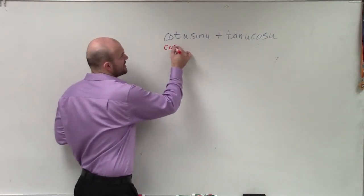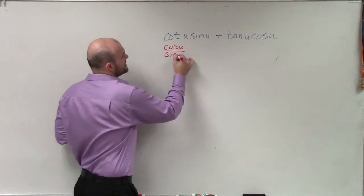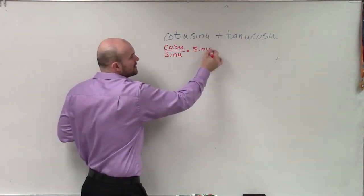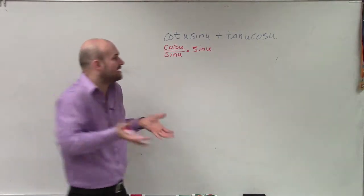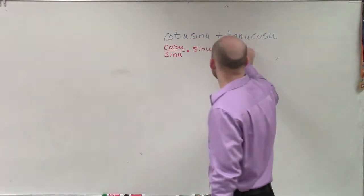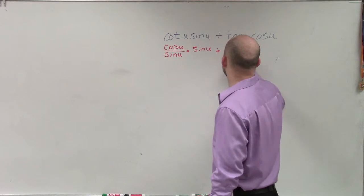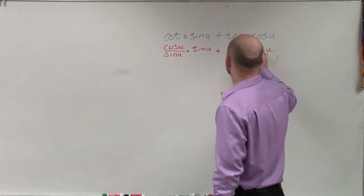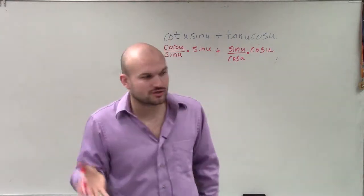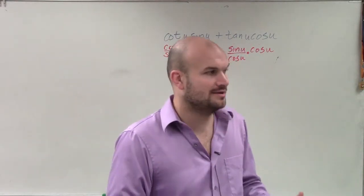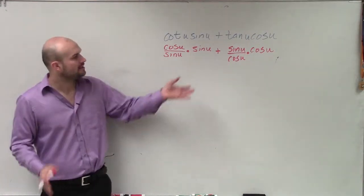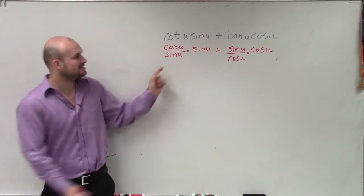Let's rewrite cotangent as cosine of u over sine of u. And I'm not going to touch anything with sine, because I know that's in the numerator, and I'm going to want to cancel. I'm going to want to divide it out with something. Tangent is sine of u over cosine of u times cosine of u. So by me selecting which trig functions I want to simplify, not doing everything. You don't have to simplify everything. But by doing it this way, I can now see that...